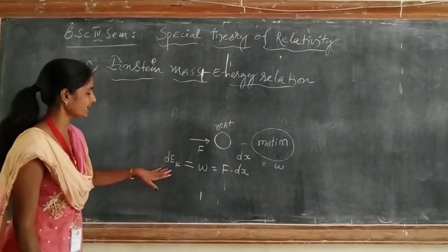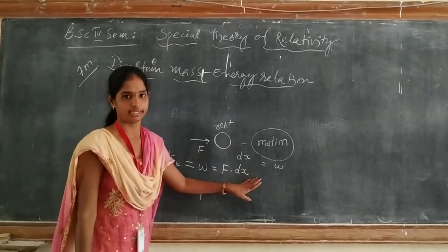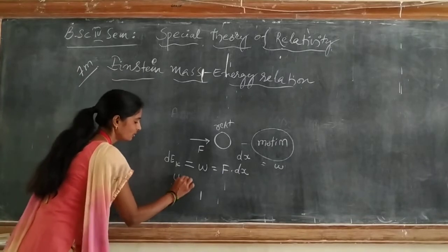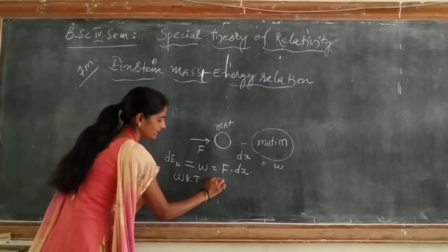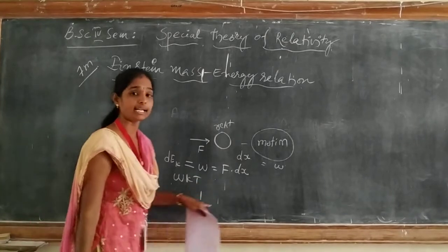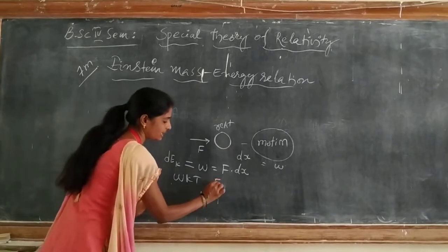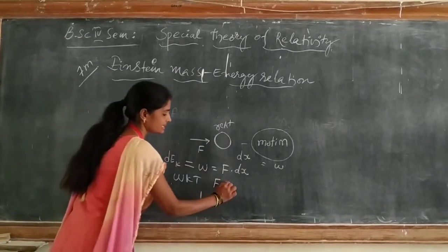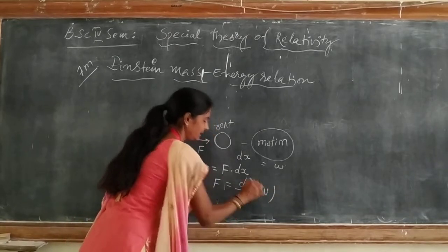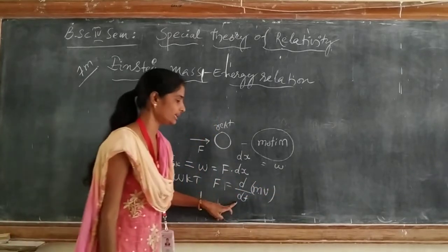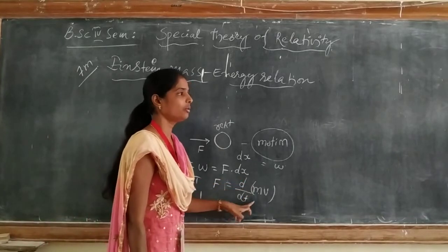We may write the kinetic energy: dEk = W = F·dx. And we know from Newton's formula that force is defined in terms of linear momentum — the rate of change of linear momentum is nothing but force. That is, F = d(mv)/dt.